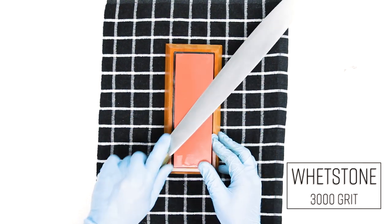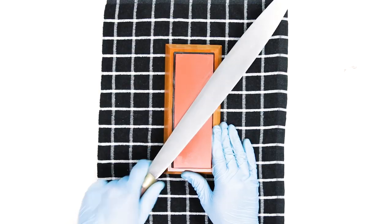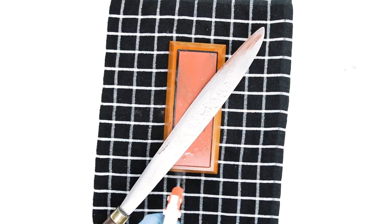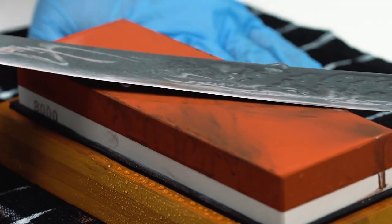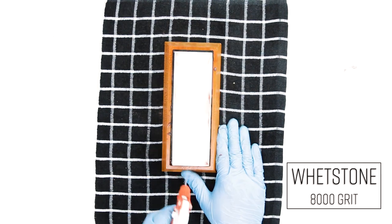To sharpen the edge I started with a 3000 grit whetstone. And then I used an 8000 grit to sharpen it even more.